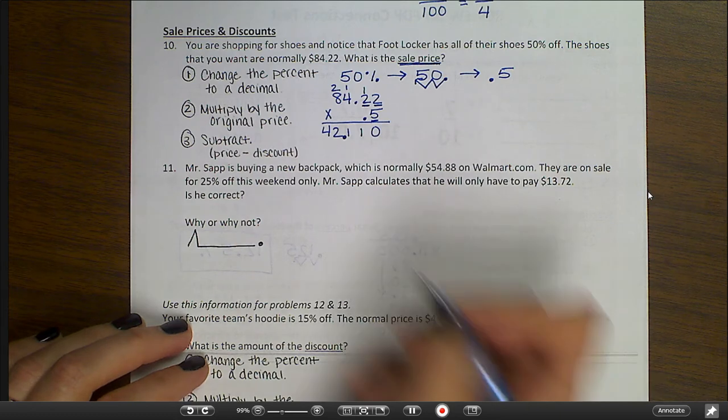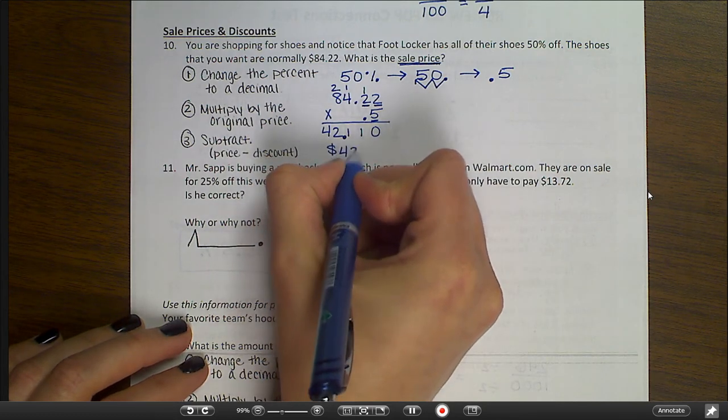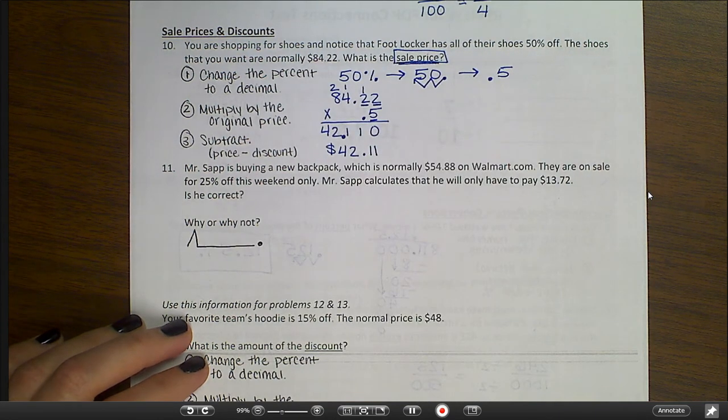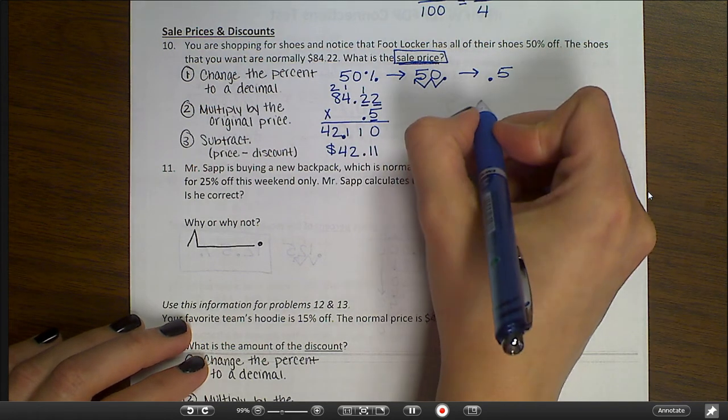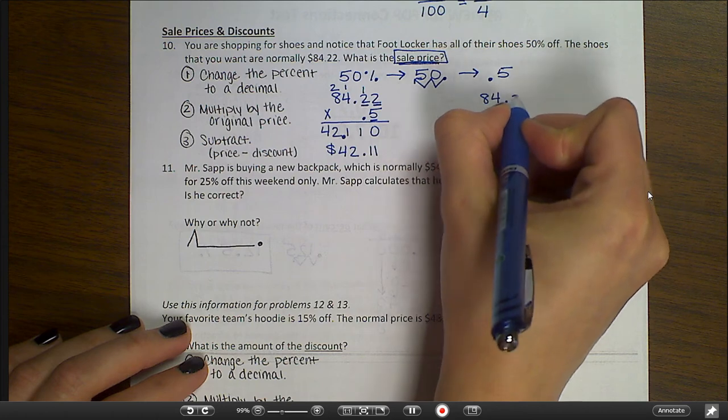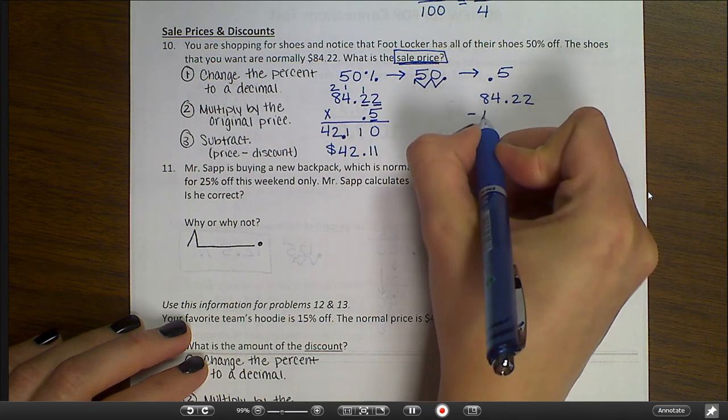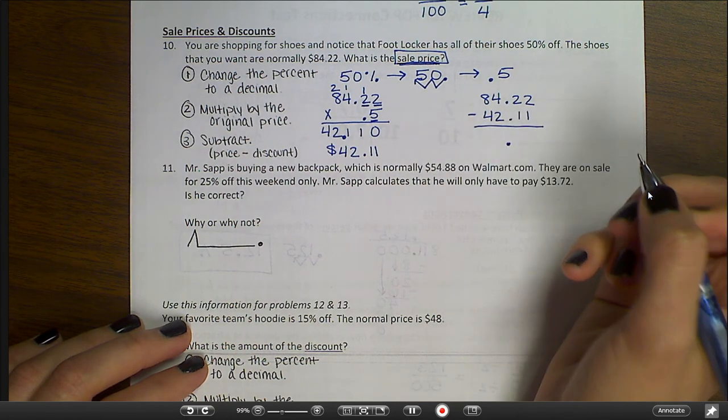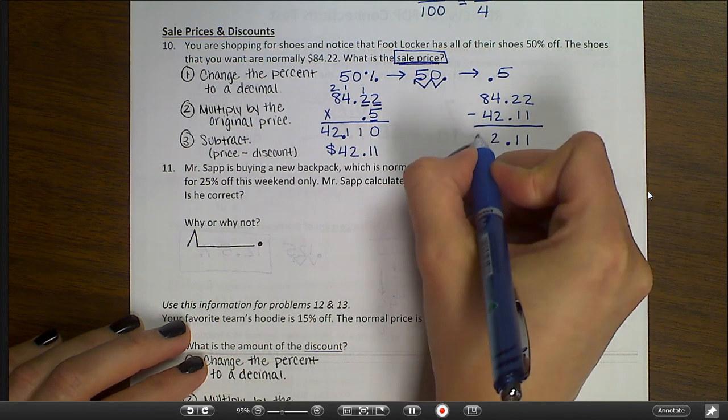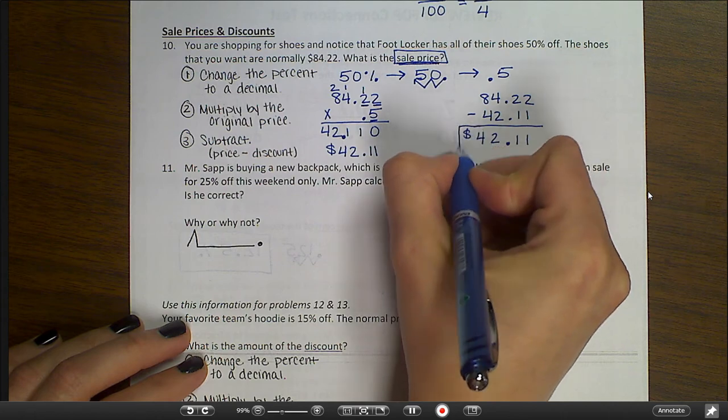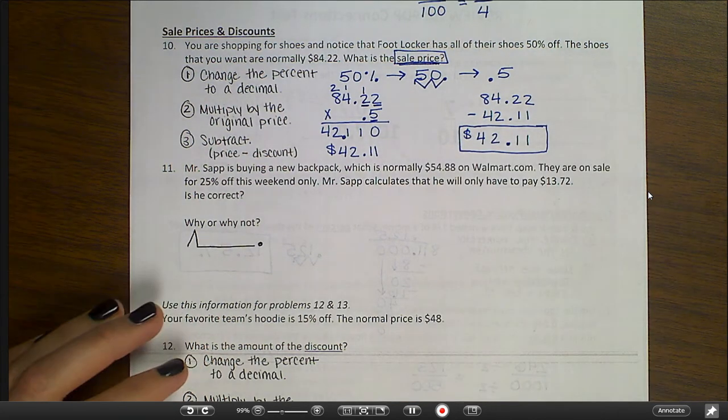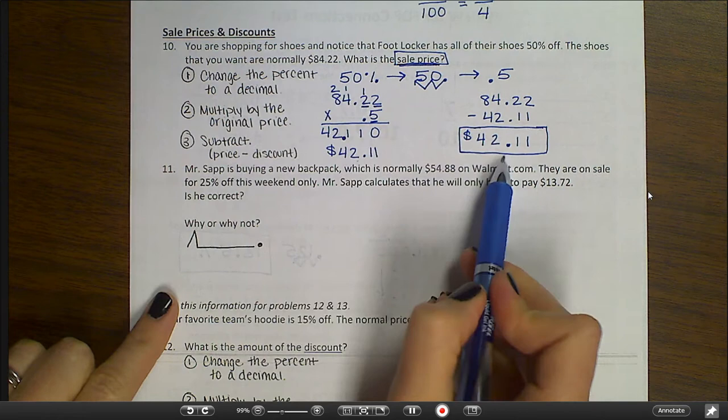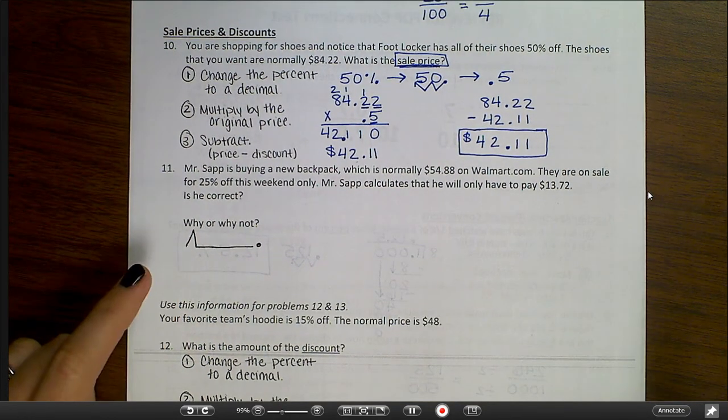So if they were asking me how much money I'm actually saving, the answer would be $42.11. But that's not what they're asking. Remember, they're asking for the sale price. So then I need to do the third step, which is to subtract. My original amount, $84.22, minus the amount that I'm saving, $42.11. We do need to line up our decimal points when we subtract. And we subtract from the right. So the sale price is also $42.11. And you're going to notice that anytime it's 50% off, the amount of the discount and the amount that I'm actually paying will be the same. But that only works when it's 50% off.